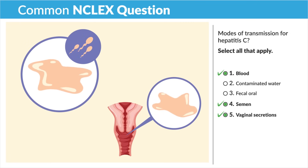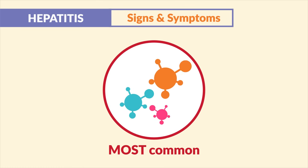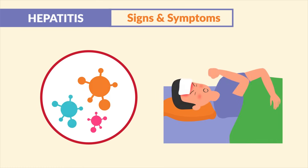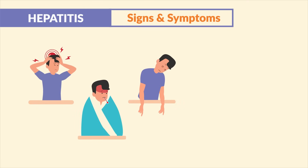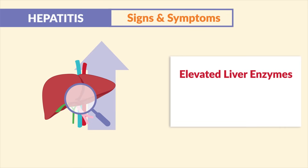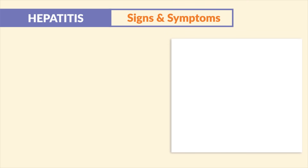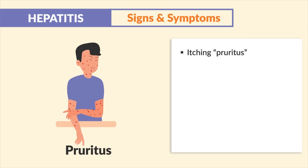When hepatitis is caused by a virus, which is most common, we see flu-like symptoms: headache, fever, fatigue (malaise), nausea, and vomiting. A key finding is elevated liver enzymes — specifically elevated ALT and AST — as well as elevated bilirubin, since the liver is inflamed.